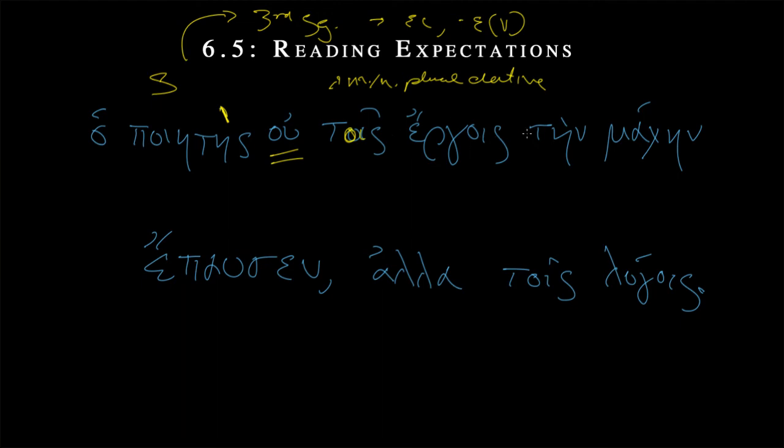We get that with ergois. So, immediately our expectations satisfy. Tois ergois. The deeds. As often, this gets opposed in Greek thought to words. You can talk the talk, but can you walk the walk? That's the kind of idea. This is the walk the walk. So, the poet, not with the words. And again, this might be a class, just with words. Tame.